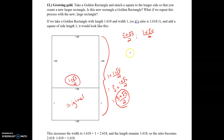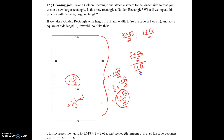To simplify this and see if we end up with the golden ratio — phi — we divide (3 + √5) / 2 by (1 + √5) / 2. The 2's cancel out, and we end up with (3 + √5) / (1 + √5).